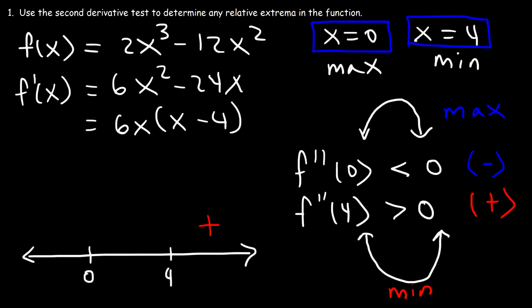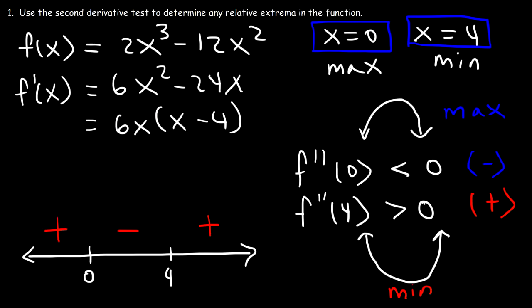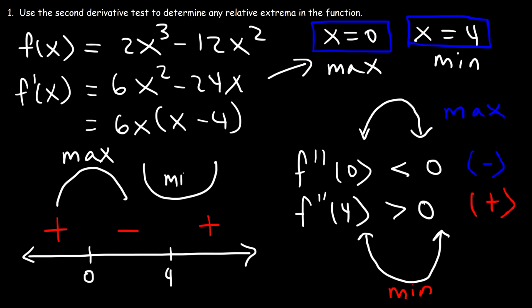Plugging in a number between 0 and 4, like 2: 6(2) is positive and 2 - 4 is negative, giving a negative result. Plugging in -1: 6(-1) is negative and -1 - 4 is negative, giving a positive result. Going from positive to negative means the function is increasing then decreasing — a maximum at 0. Going from negative to positive means decreasing then increasing — a minimum at 4. This confirms the second derivative test results.